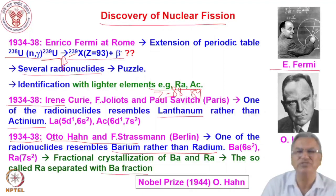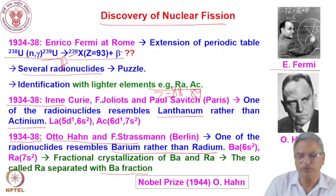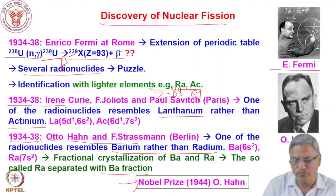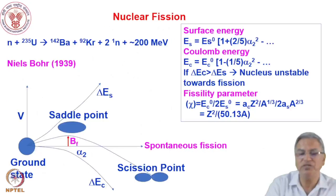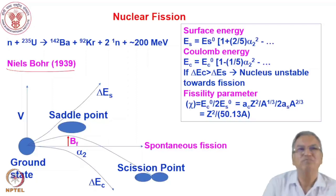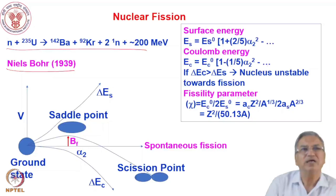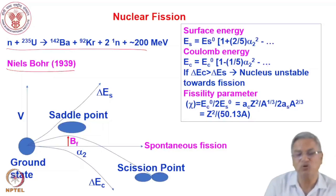There is an excellent story behind this discovery. Lise Meitner, an old colleague of Otto Hahn, had to leave Europe because of the Nazi movement, and later gave the theoretical explanation of nuclear fission. The Nobel Prize for the discovery of nuclear fission went to Otto Hahn in 1944. The theory behind nuclear fission was given by Niels Bohr in 1939 in a notable paper published in Physical Review. Nuclear fission can be spontaneous fission, or induced by neutron capture by a heavy nucleus like U-235, producing two fission fragments, neutrons, and large amounts of energy.